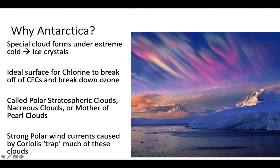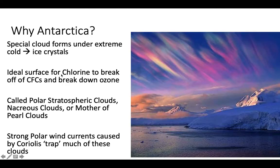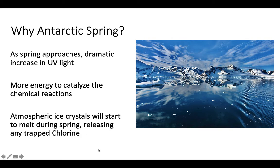This is all happening in the wintertime — clouds forming and helping chlorine break off of CFCs. Then in the springtime, because Antarctica is at the pole, the difference in sunlight between winter and summer is dramatic. There's a lot more sunlight in Antarctic spring compared to winter. As spring approaches, we see a big increase in UV light, which catalyzes the chemical reactions that lead to ozone degradation. As the area starts to warm, these ice crystals melt, releasing any trapped chlorine, which exacerbates these reactions. That's why the hole in the ozone layer is at its worst in their spring, around October each year.